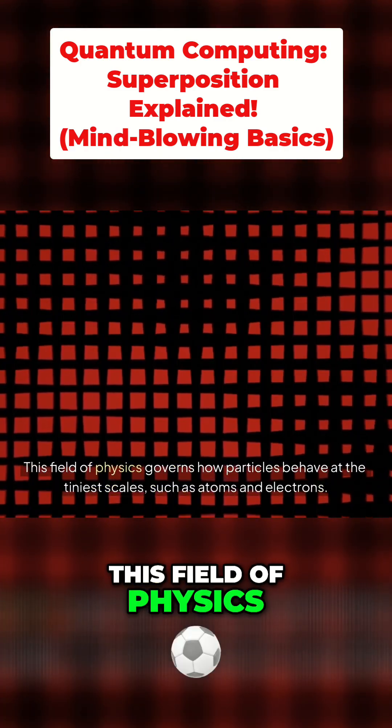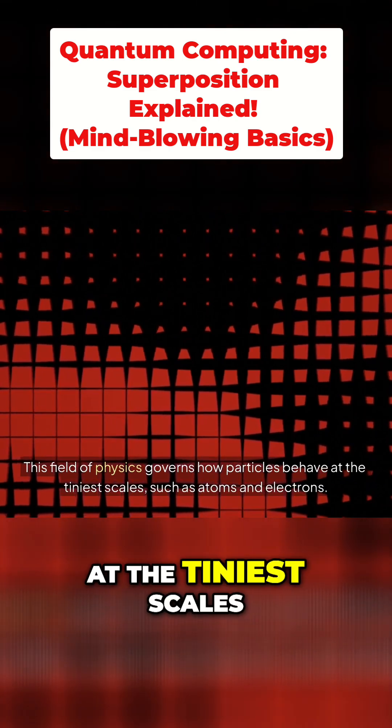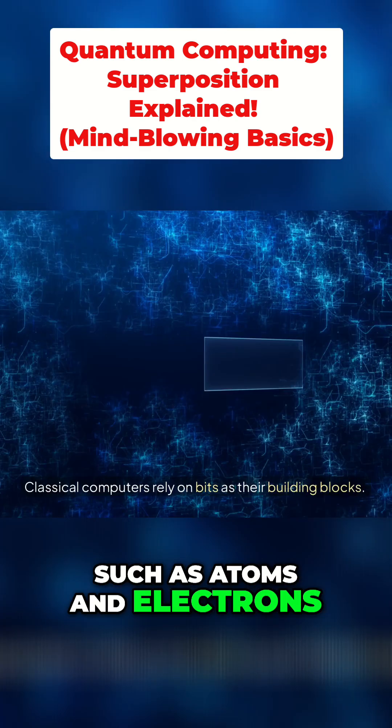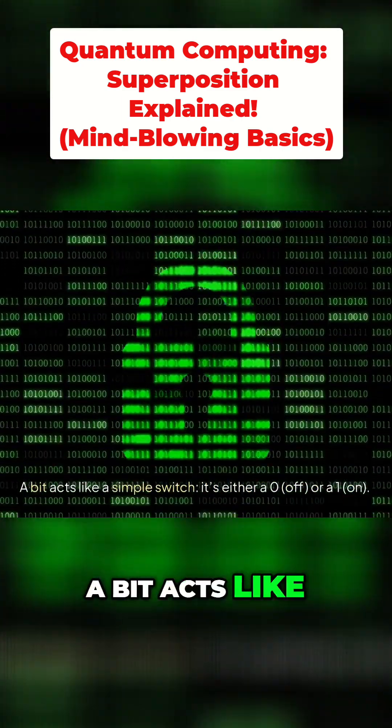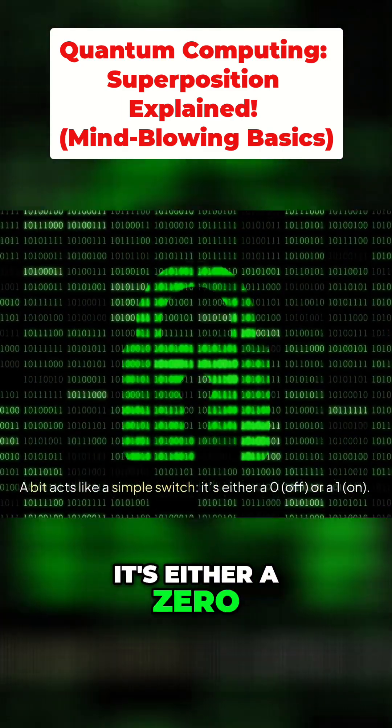This field of physics governs how particles behave at the tiniest scales, such as atoms and electrons. Classical computers rely on bits as their building blocks. A bit acts like a simple switch—it's either a zero (off) or a one (on).